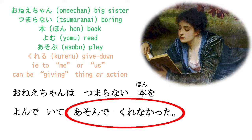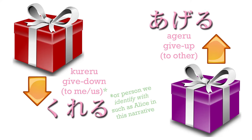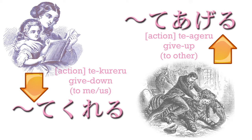Asonde kurenakatta. This is another use of the te-form. Kureru means 'to give,' and it specifically means 'give downwards.' The reason we say 'give downwards' in Japanese is because we always represent ourselves as being below other people. So kureru always means that someone is giving something to me or to someone close to me. But what is Alice's big sister giving — or not giving — to Alice? It's not the book; it's not any actual object. She is giving the action to which kureru is connected by the te-form. She is giving — or in this case not giving — the act of playing to Alice.